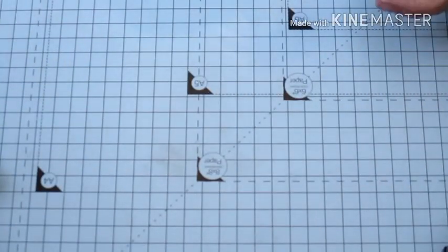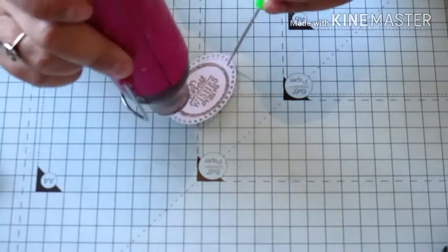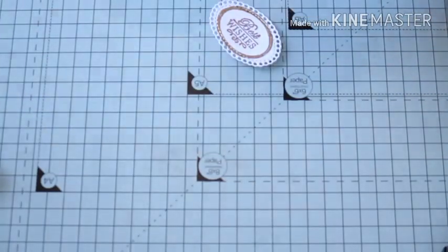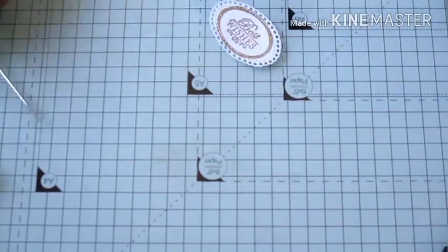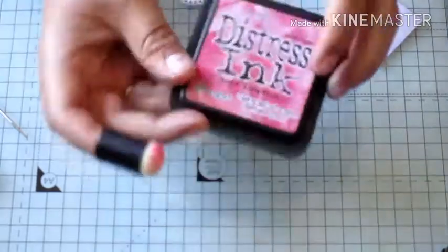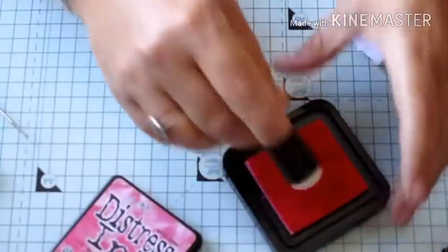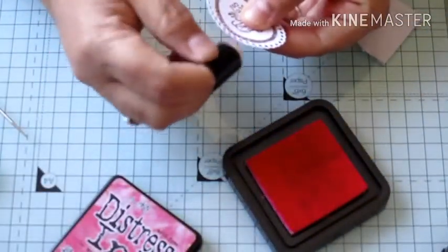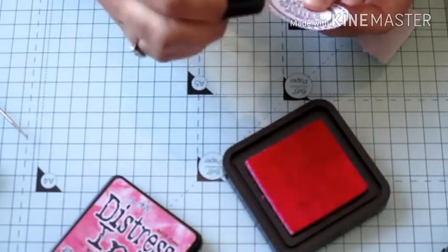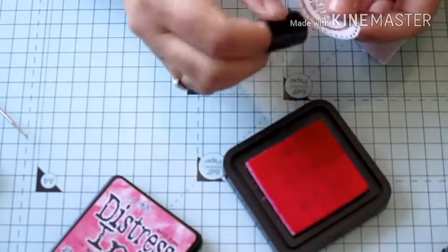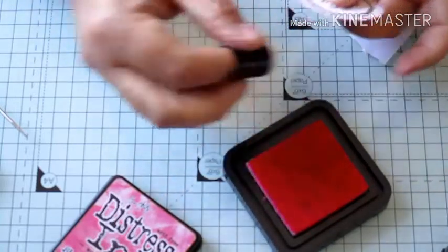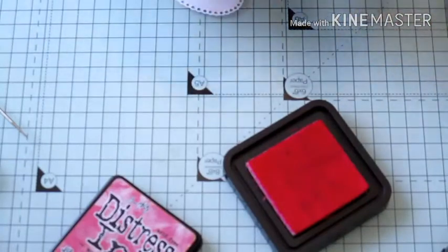So I'm just going to pop on my heat gun. So I'm going to use some foam pads. First of all, what I'm going to do is I've just got this worn lipstick. I'm just going to go around the edges using one of my little dabbers with this pink. Just around the edge, just touching the edge with my dabber. And then I'm going to put some foam pads on.